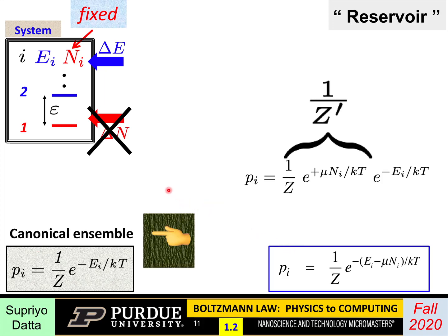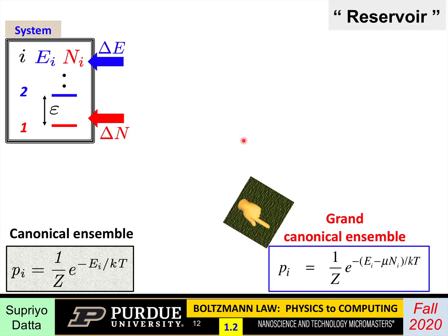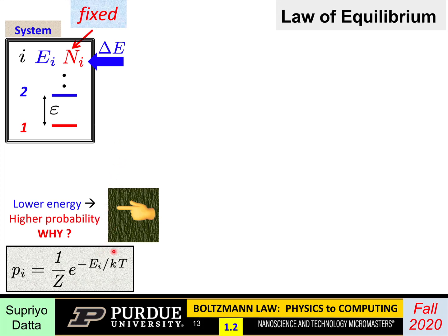This case is generally referred to as the canonical ensemble — an ensemble of systems that exchange only energy with the reservoir. Whereas if the system is exchanging both energy and particles, you call it a grand canonical ensemble. Those are the technical names you'd see in a statistical physics textbook. For this discussion, let us first focus on the canonical ensemble where only energy is exchanged, so the expression we are trying to justify is the one without μ and N appearing explicitly.